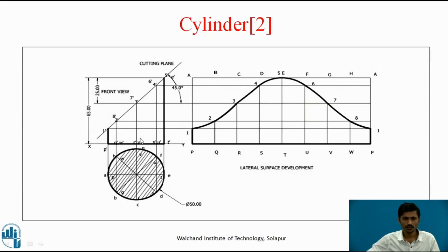The points from the top view can be projected to get two generators. The stretch-out line must be divided into 8 parts, because we have taken 8 divisions, and then named accordingly. Connecting these with the top points gives the generators on the development plane. We get points of intersection between the generators and the cutting plane — points 1, 2, 3, 4, 5, 6, 7, 8. Where there are two generators we get two points, and where there is one generator we get one point.